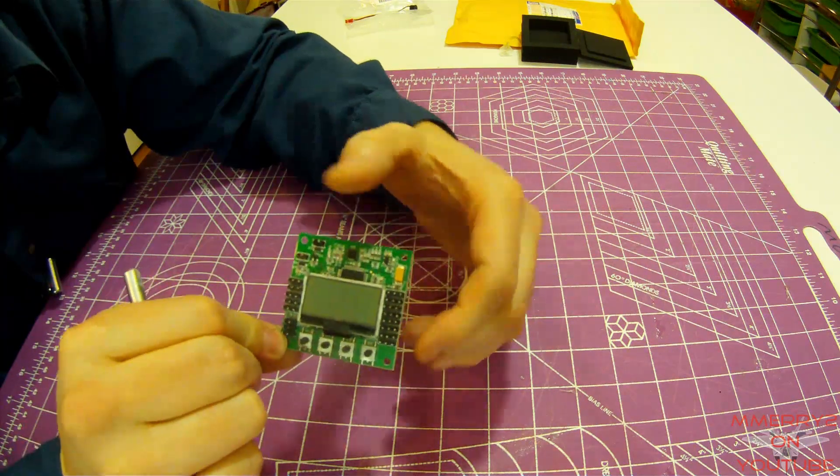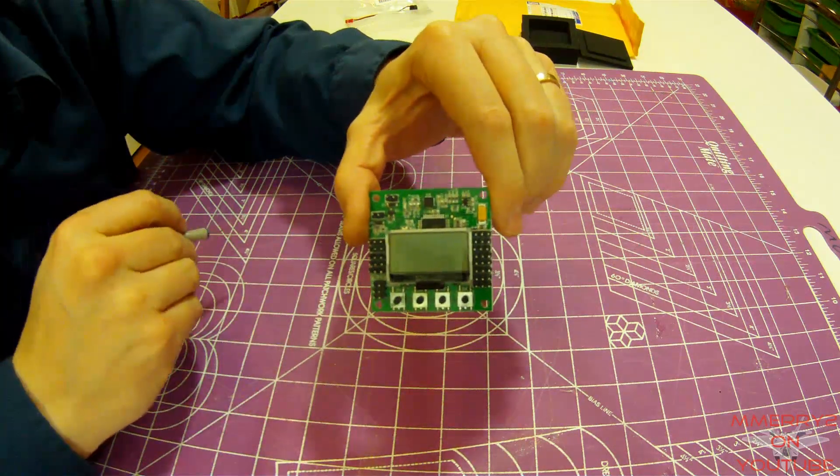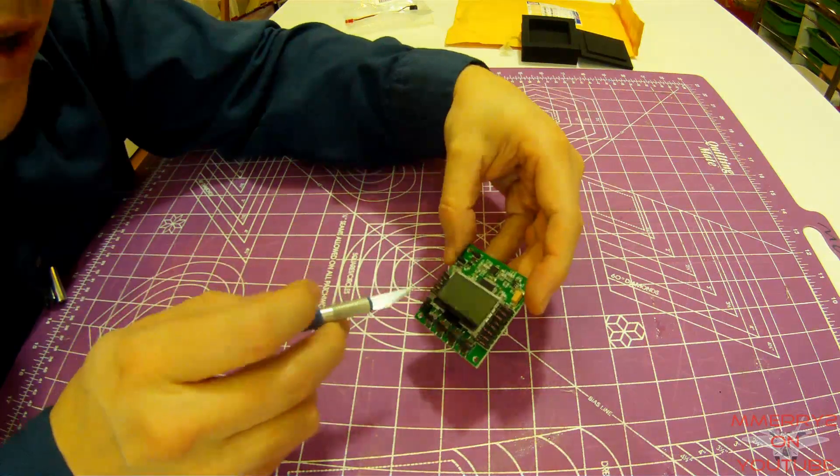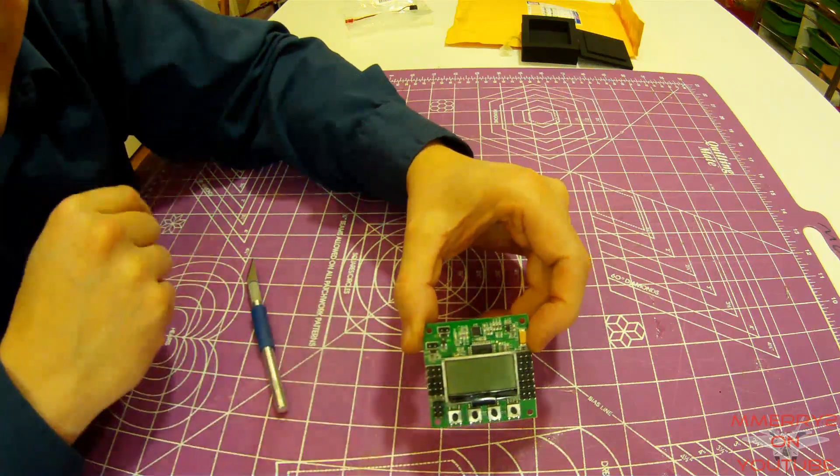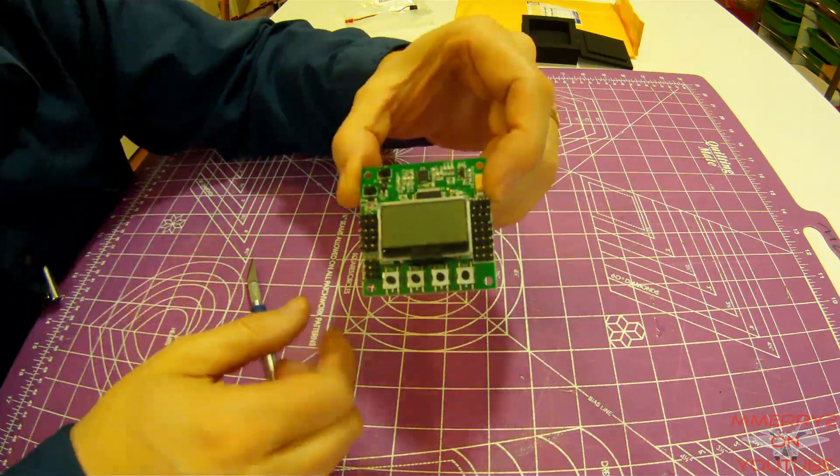It looks a lot like the KK 2.0 just at a glance. Don't see any directional markers to let you know that the board should be facing forward that way. That's a little disappointing.